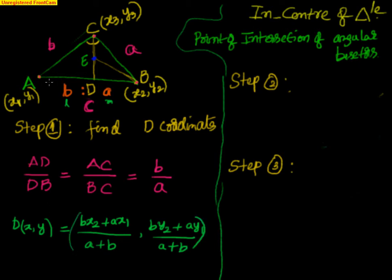Our idea is to first find D. Then I know C and D. Now I want to draw another angular bisector from B so that I know the ratio CE to ED. I know the coordinate of B, I just found D, I know C — so I can find out E. From C I have drawn the angular bisector, dividing AB in the ratio B to A because that is what the angular bisector theorem says.